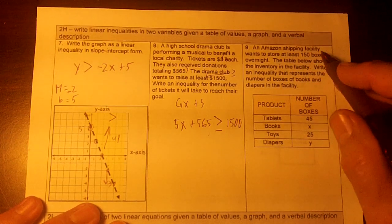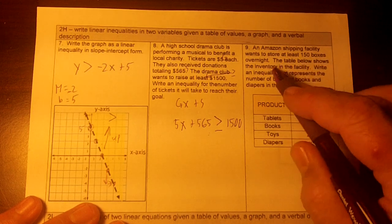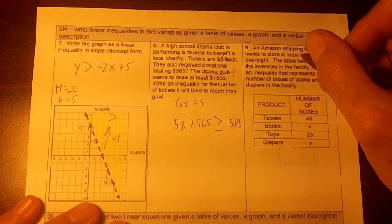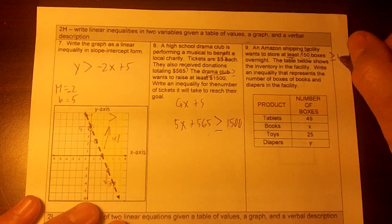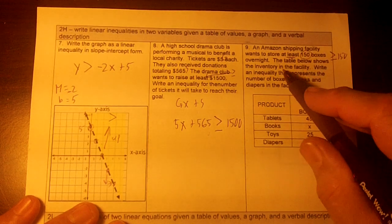Okay, on number nine, an Amazon shipping facility wants to store at least 150 boxes. So we have greater than or equal to 150, right?